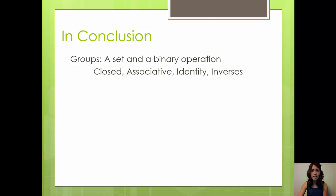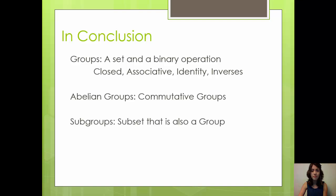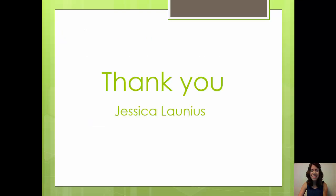In review, today we discussed what groups are — a set and a binary operation where the operation is closed and associative, there is an identity element, and there is an inverse for each element. We also discussed abelian groups, which are groups whose binary operation is commutative. Third, we looked at subgroups, which are a subset of the original set that also form a group. And finally, we looked at subgroup lattices, which are an organizational structure for subgroups. Thank you.